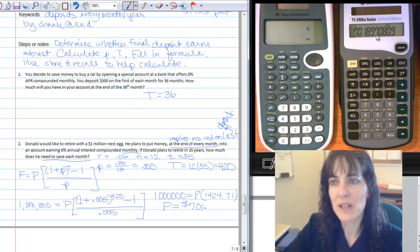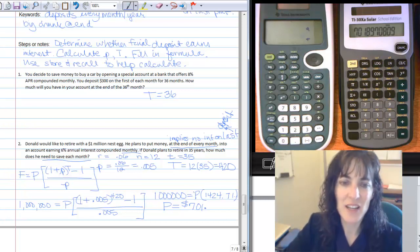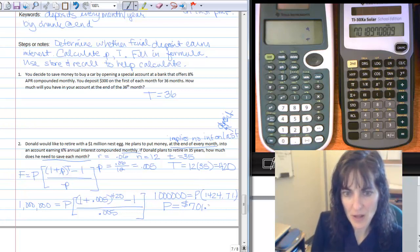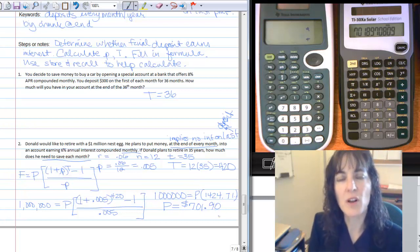So because I have a 7 following, the 9 has to bump up. It becomes a 10, which makes that a 9, so 89 bumps up to 90, so my answer, $701.90.